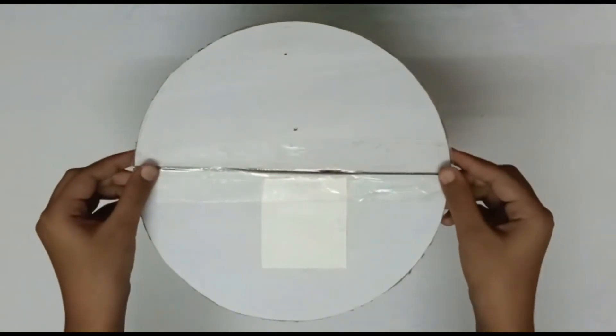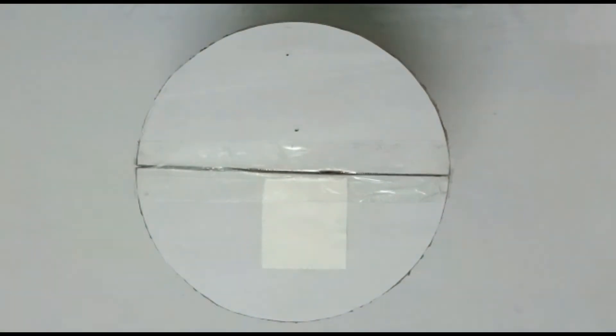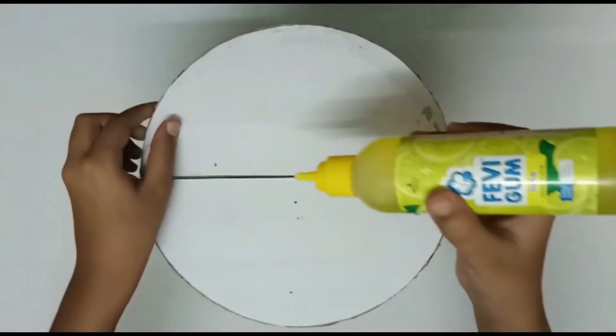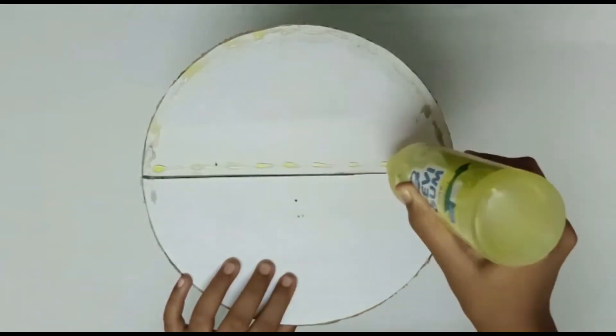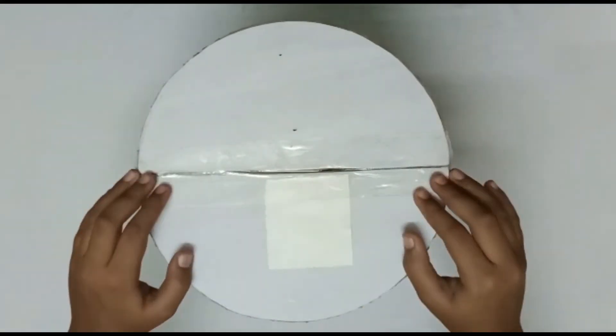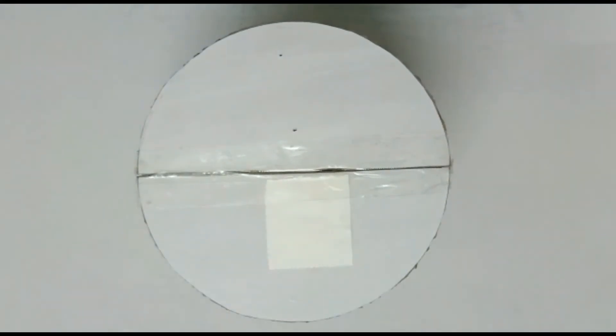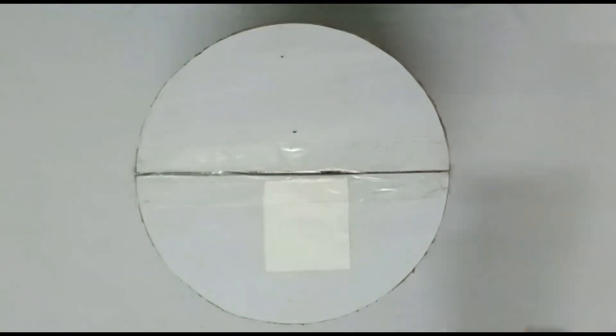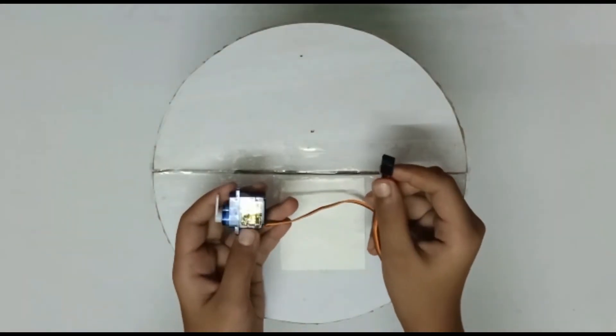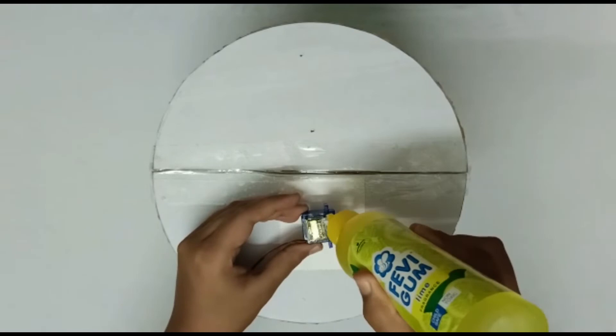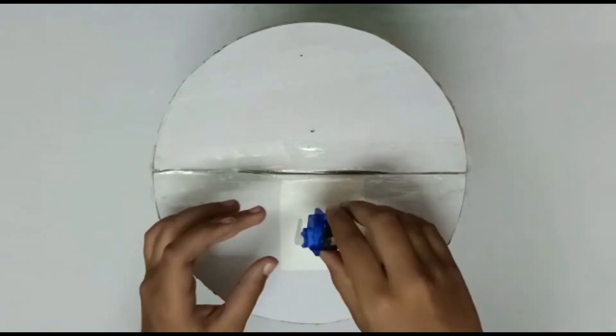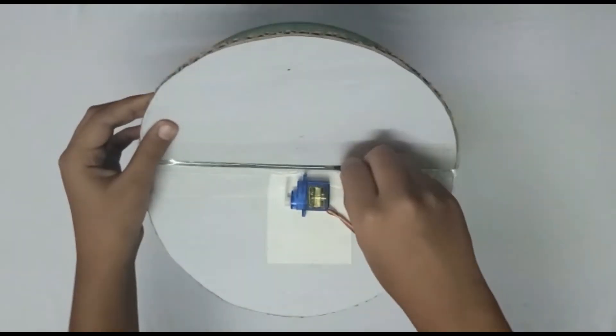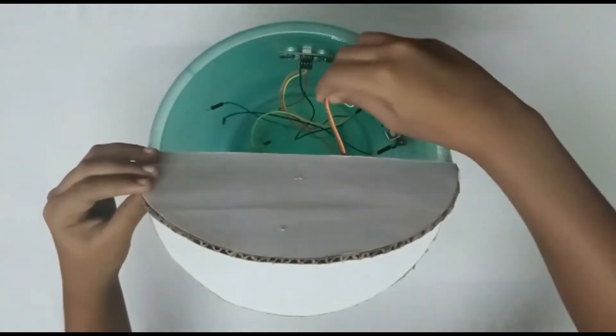Follow the same process for the battery also. Now take the cardboard and paste one half of it on the top of the bucket. Take the servo motor and paste on that portion of the cardboard which is pasted on the bucket. Put the wire inside the cardboard in this manner.